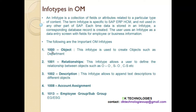The next info type is 1013, which is 'Employee Group/Sub Group'. In this info type you can assign a position to an employee group and employee sub group. So the important OM info types are 1000, 1001, 1002, 1008, and 1013. The concept of info types is the same whether it's PA or OM, but each info type's purpose is totally different. When we do practical work in OM, I will show you how these info types are created.